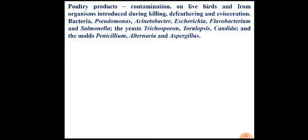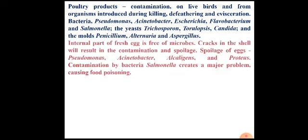Poultry products are also contaminated by the entry of undesirable microorganisms that lead to spoilage. As with meat, poultry products get contaminated with microorganisms present on the skin of live birds. These microorganisms contaminate poultry during killing, de-feathering, and evisceration processes. Bacteria responsible include Pseudomonas, Acinetobacter, Flavobacterium, and Salmonella. Several yeasts are also responsible, like Torulopsis and Candida, and fungi like Penicillium, Alternaria, and Aspergillus.